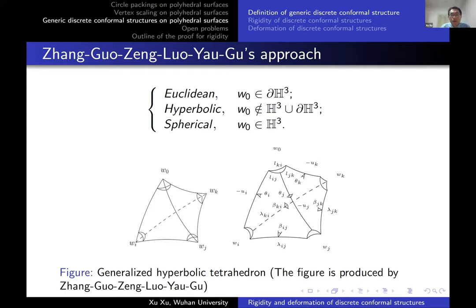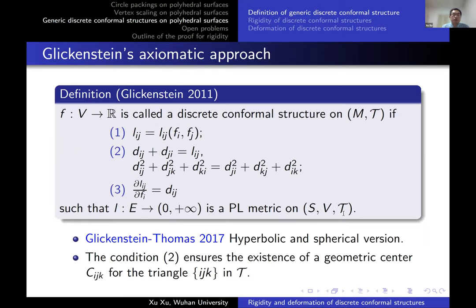Another approach is suggested by Glickenstein, from a Riemannian geometry perspective. He defines the discrete conformal structure as a function F defined on the vertices of the surface, requiring it to satisfy three conditions: first, the edge length L_ij depends only on F_i and F_j, analogous to the fact that smooth conformal transformation depends only on the conformal factor.